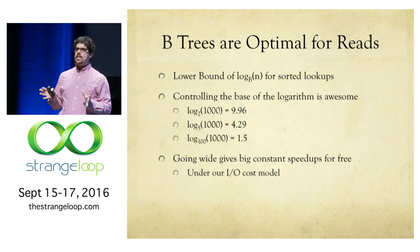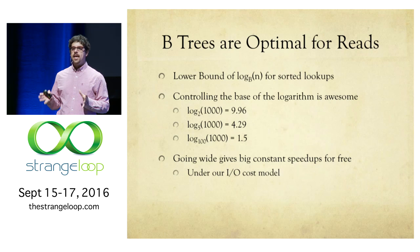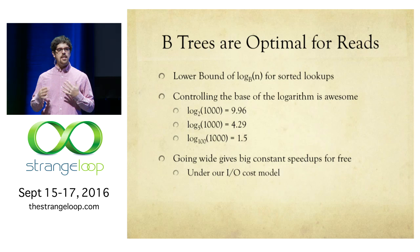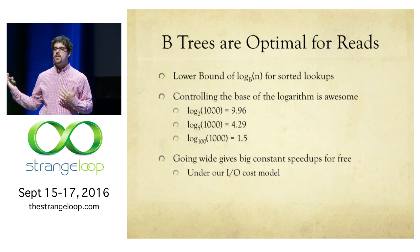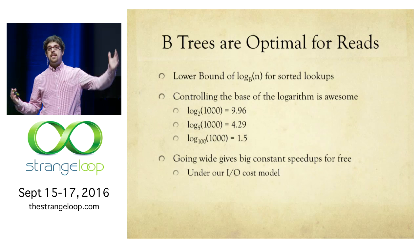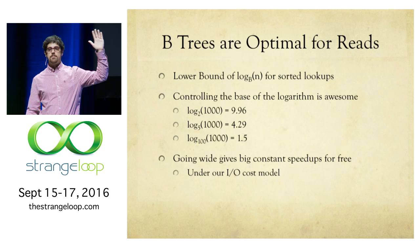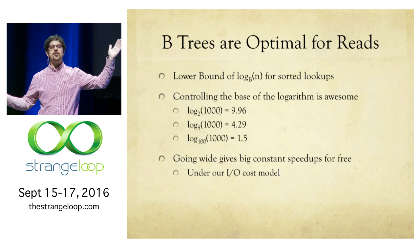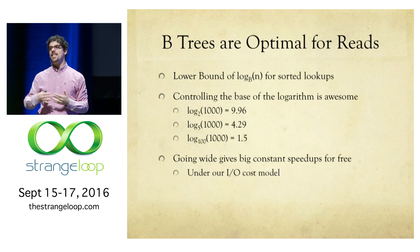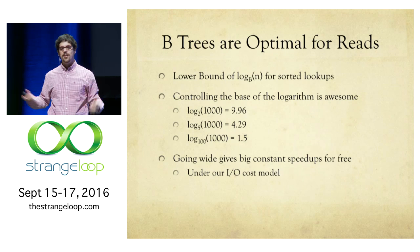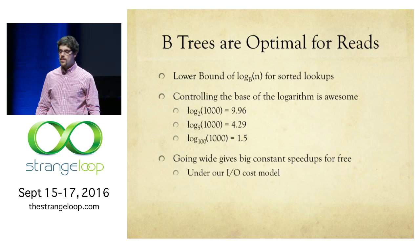Suppose we had a tree with 1,000 elements as a binary search tree — we spend about 10 units of time on a lookup. If we go to a B tree with five children, we can nearly double the performance. With 100 children per node, we're nearly seven times faster than the binary search tree. The speed isn't coming from fewer comparisons — it's coming from reading more useful data per I/O. By going wide, we get big constant speedups for free. These are constant speedups, not asymptotic improvements, but still — would anyone say no to their program being 100 times faster for free?